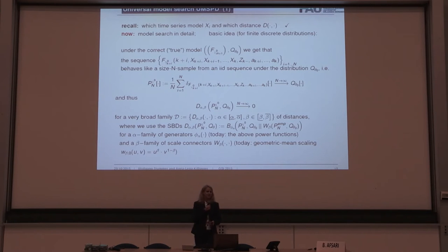At this point, we knew which time series model and which distance is to be used, but it remains to estimate the parameters gamma and theta. The basic idea behind this is that under the true model F_gamma_0 and Q_theta_0, we get that the sequence of the residuals behaves like a size n sample from an IID sequence under the distribution Q_theta_0. And so, the empirical distribution of the residuals tends versus the true distribution by increasing sample size. And thus, our distances converge towards zero. Zero for a very broad family of distances. But here, we used our scaled Bregman distances for our alpha family of generators and a beta family of scale connectors. Today, these are the above-mentioned power function, respectively, the geometric mean scaling.